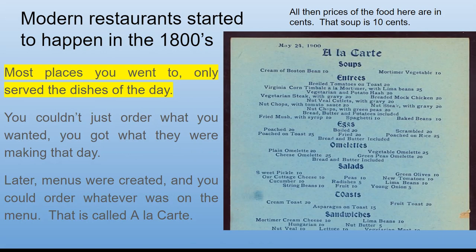Modern restaurants started to emerge in the 1800s. Most places only served the dishes of the day — you couldn't order off a menu, you simply ate what they were going to cook that day. Later on, menus were created so you could order what you wanted.